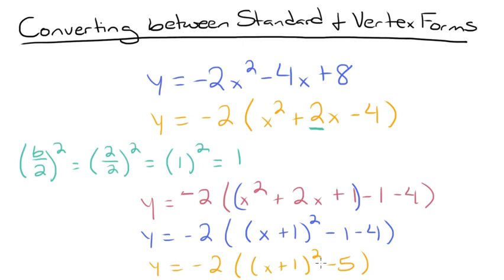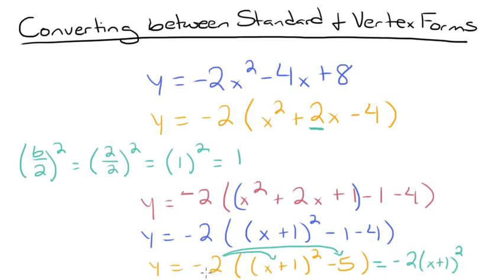The final step is distributing the negative 2 inside the larger set of parentheses — into x plus 1 squared and into the negative 5. Negative 2 times x plus 1 squared stays as negative 2 times x plus 1 squared, and negative 2 times negative 5 is 10. So the final vertex form of this equation is y equals negative 2 times x plus 1 squared plus 10.